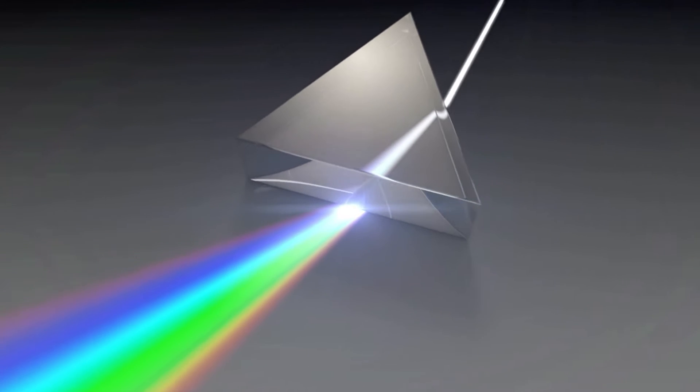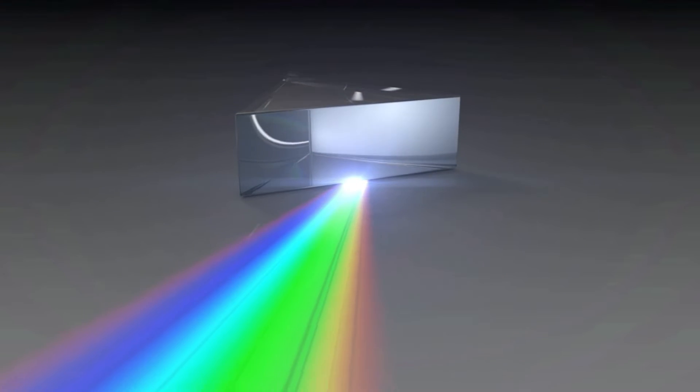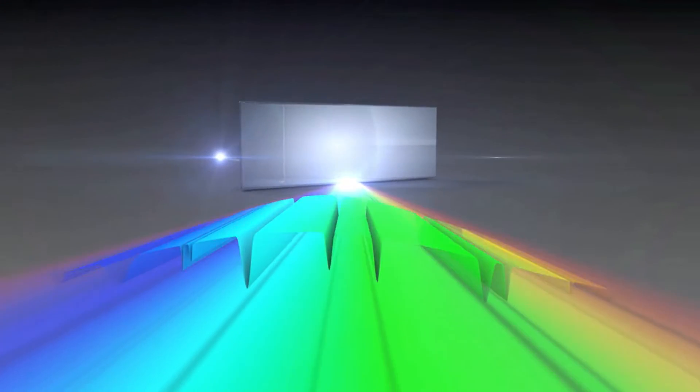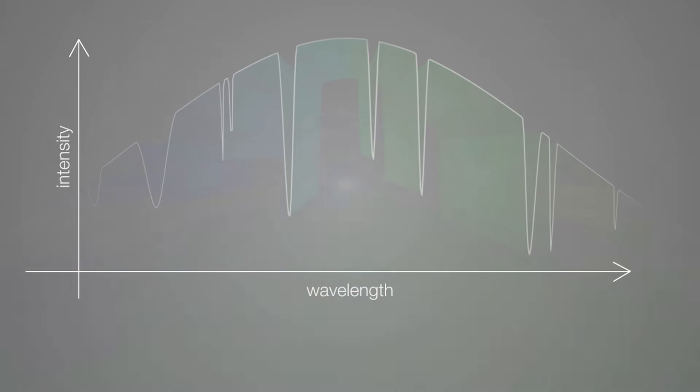Any object that absorbs or emits light can be studied with a spectrograph to determine characteristics such as its temperature, density, chemical composition, and velocity.